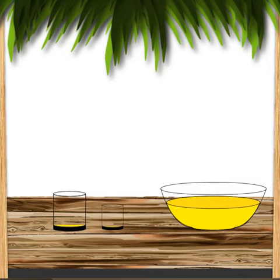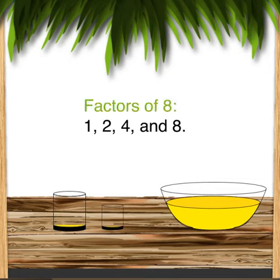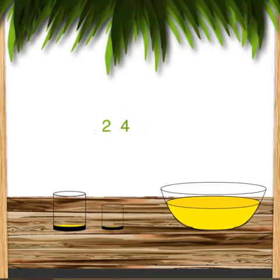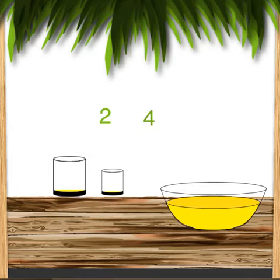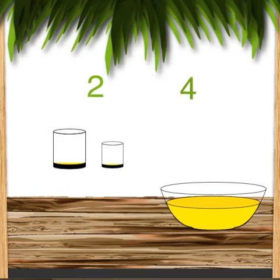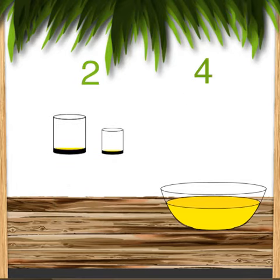In order to solve this problem, we have to look at the factors of 8: 1, 2, 4, and 8. We throw away 1 and 8, and we keep the significant numbers 2 and 4. Then we find a way to get to 2 or 4 by using the cups 10 and 6.